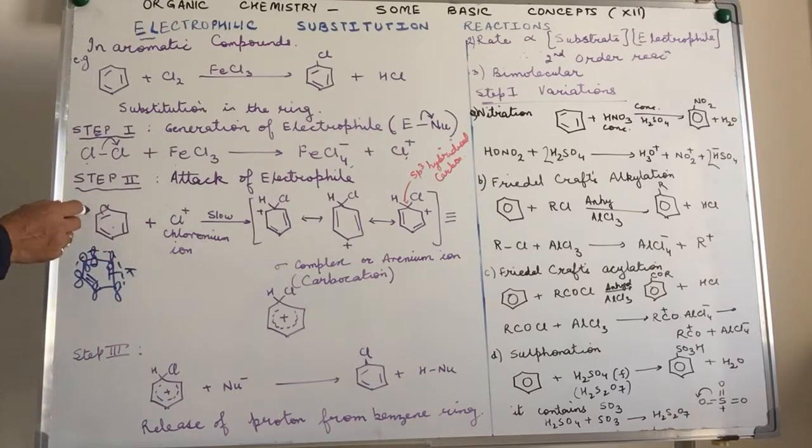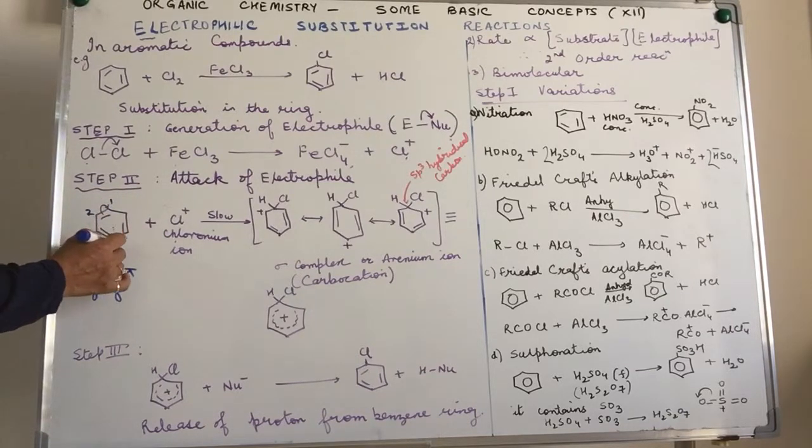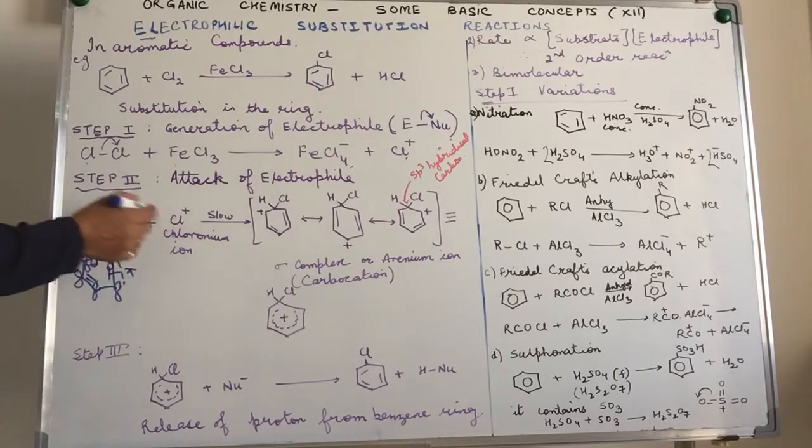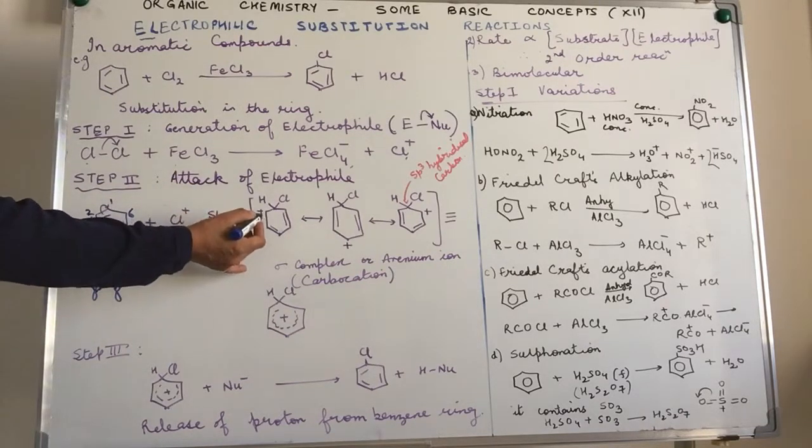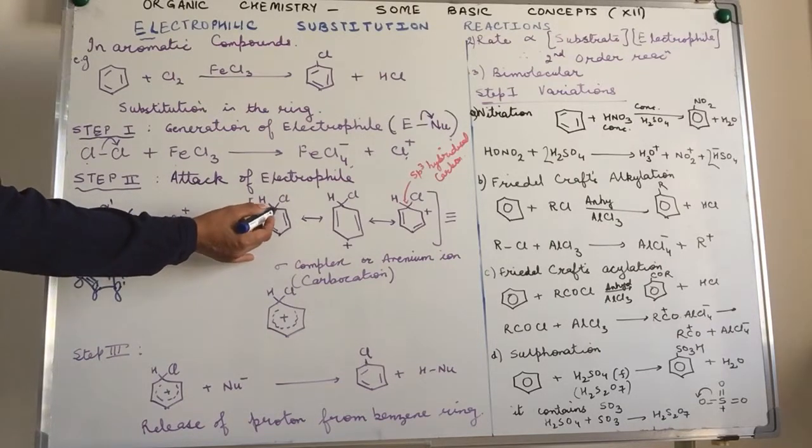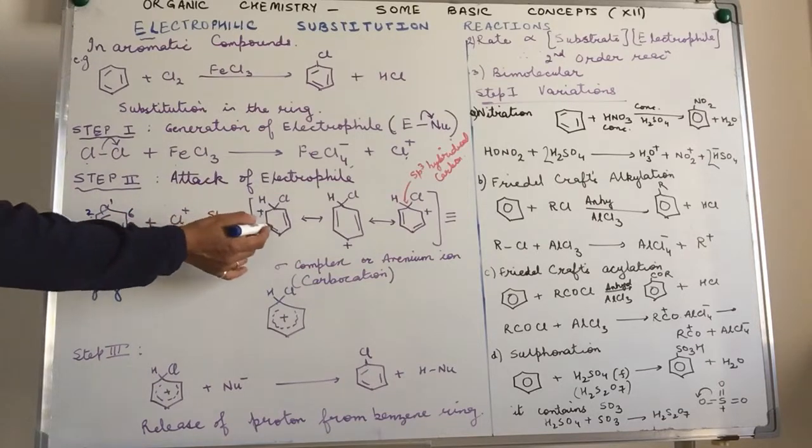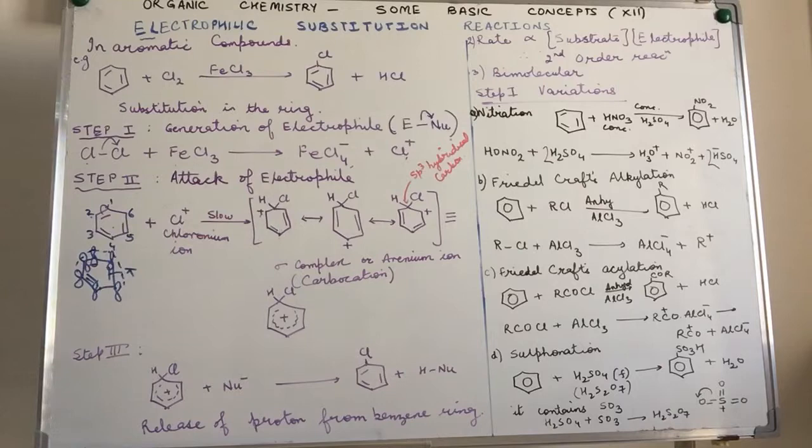Cl+ gets attracted to it and tries to pull the pi electrons from the benzene ring. In the process, our carbon number two—we are numbering it as one, two, three, four, five, and six—becomes deficient in electrons and acquires a positive charge. It is positively charged with only three bonds, while the other carbon atoms remain unaffected.